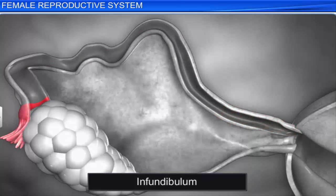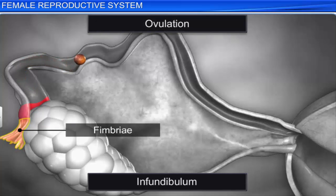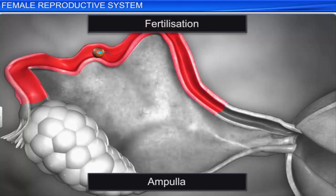The infundibulum is a dilated funnel close to the ovary, and its edges are surrounded by finger-like projections called the fimbriae. They help collect and push the ovum into the oviduct after ovulation. The ampulla is the swollen and curved part behind the infundibulum. The fertilization of the ovum takes place in this part.